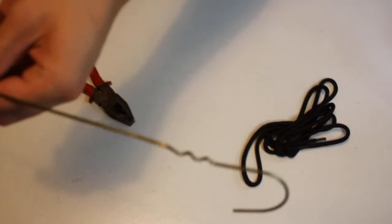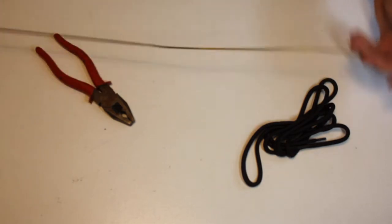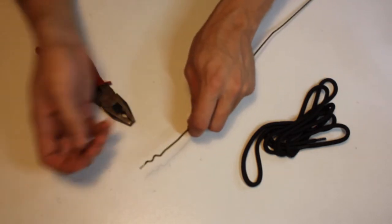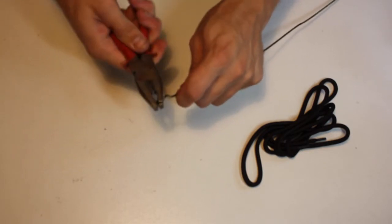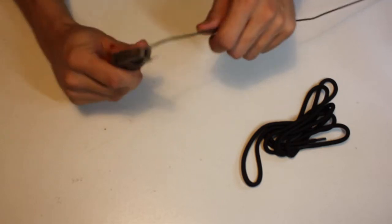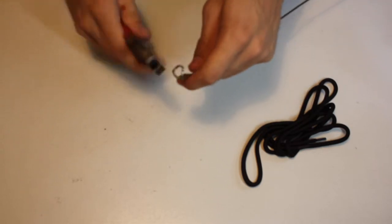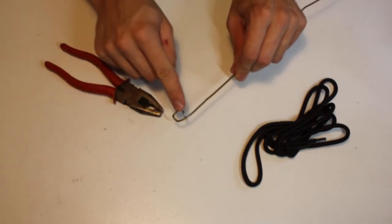So, once we have our straight piece of wire here, what we want to do first is we're going to create a kind of loop at the end for our rope to attach to, or our string. So, we're going to take our pliers, and we're just twisting that over. And so, now we have this little eyelet here.